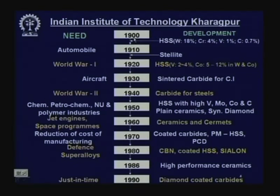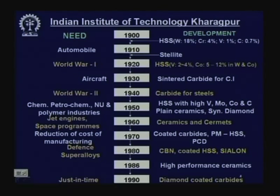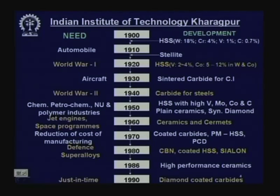For example, in 1905, the tool material high speed steel was introduced by F.W. Taylor — a great breakthrough in the history of cutting tool material development. At that time, other cutting tool materials could machine at only 5 to 10 meters per minute, but high speed steel enabled machining mild steel at up to 30 meters per minute.